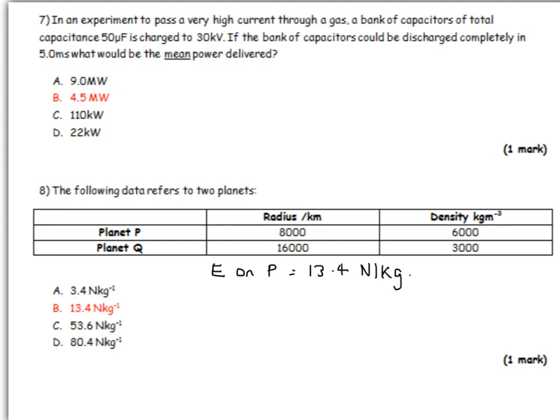This one, an experiment to pass a very high current through a gas. A bank of capacitors of total capacitance 50 microfarads. First of all, you need to be thinking we've got microfarads, so we're going to have a unit conversion. We've got 30 kilovolts, so again we're going to have a unit conversion. If they're going to discharge completely in this amount of time, what would the mean power deliver? If you're thinking power, you need to be thinking energy divided by time. Time we have, so we need to calculate what the energy is.